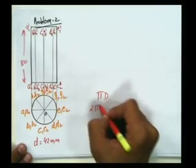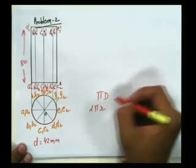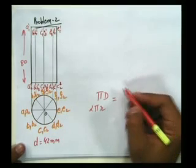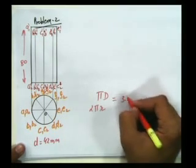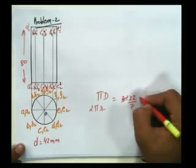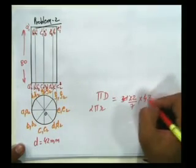The length equals πd, which is the circumference, or 2πr if calculating with radius. I'll calculate directly with diameter: π, which is 22 by 7, into 42.